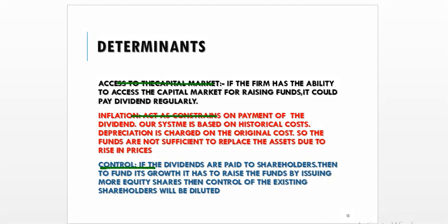If dividends are paid to shareholders, then to fund its growth the company has to raise funds by issuing more equity shares. If there are more equity shareholders, the control of the existing shareholders will be diluted. So for control purposes, the company has to adopt a conservative dividend policy.